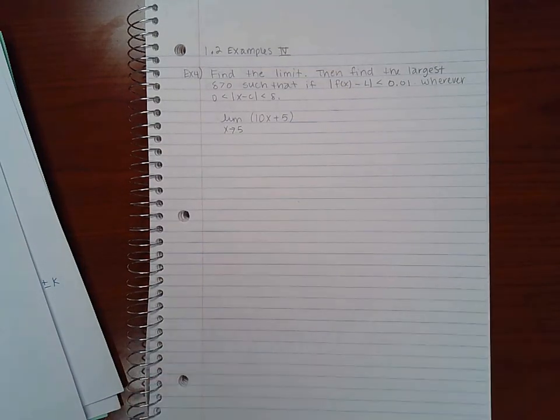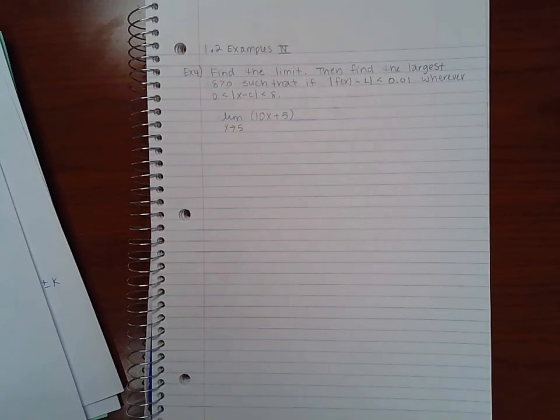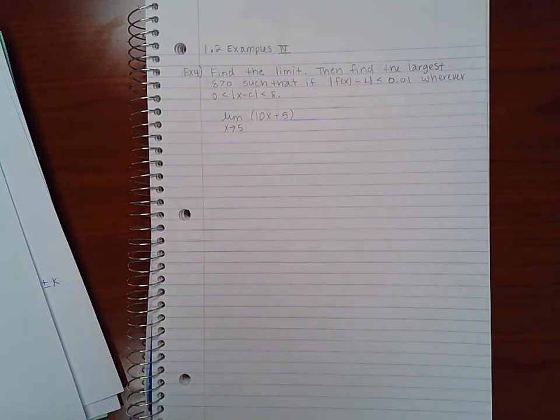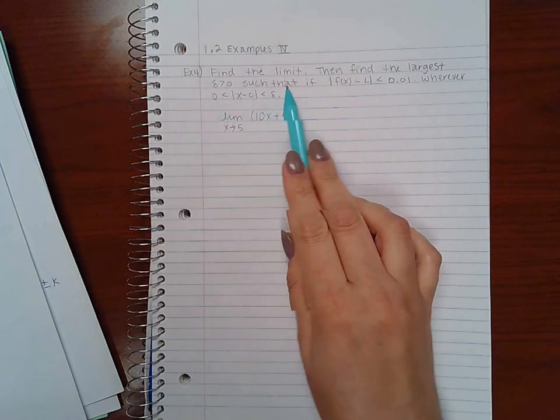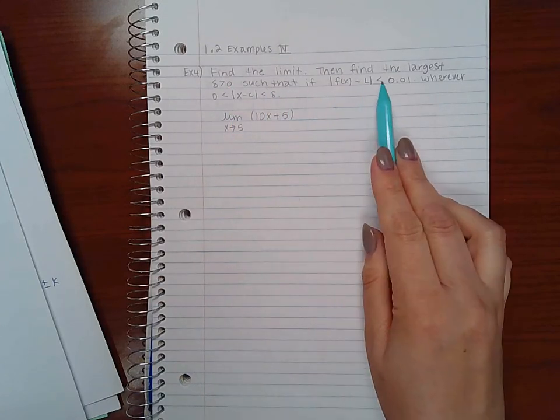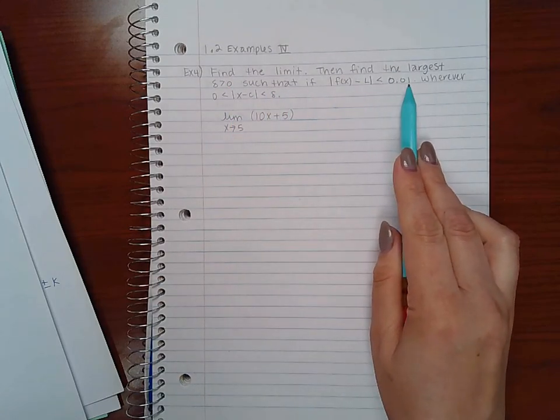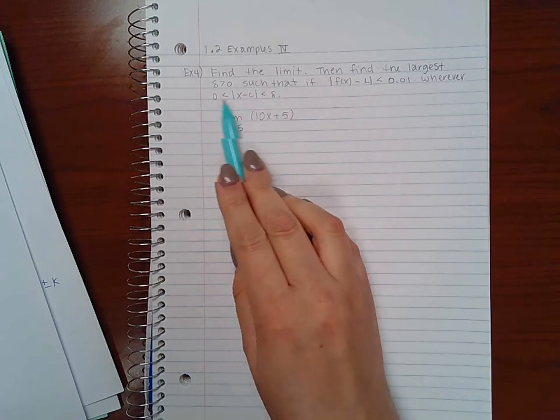Okay, in this video we are doing 1.2 Examples Part 4. We're gonna have a little bit more practice with that limit definition. For this example, the directions say find the limit, then find the largest delta greater than 0 such that if this is less than 0.01, you have this statement. So basically they're giving you the epsilon and you need to figure out what the delta is.